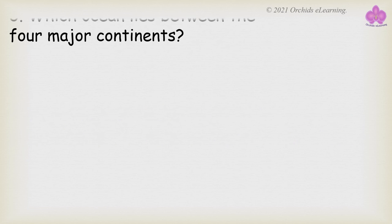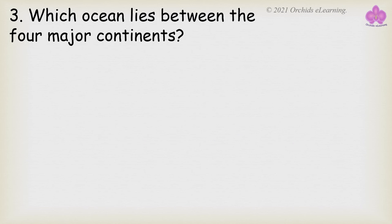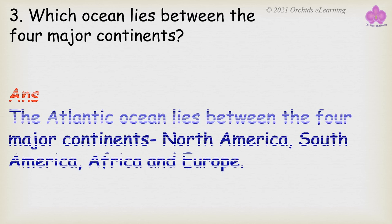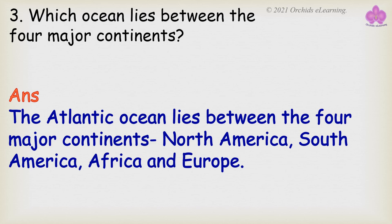Which ocean lies between the four major continents? The Atlantic Ocean lies between the four major continents: North America, South America, Africa, and Europe.